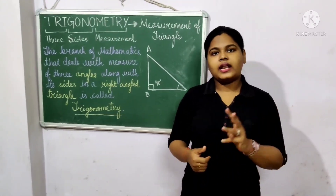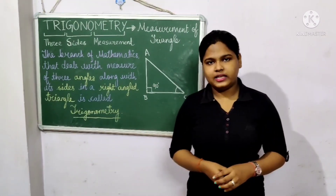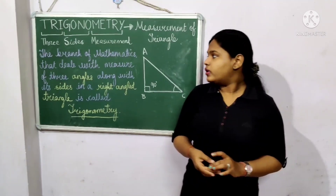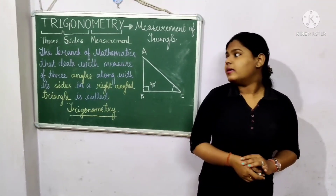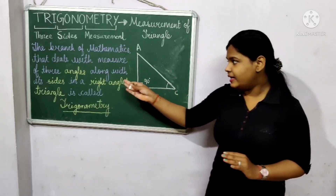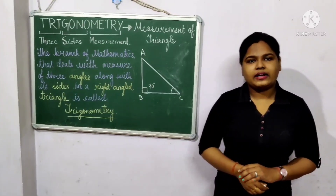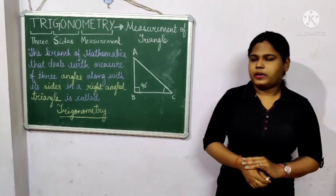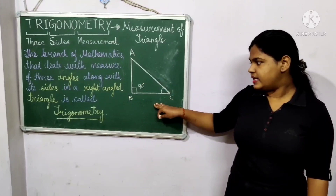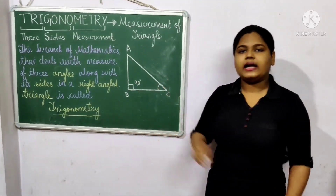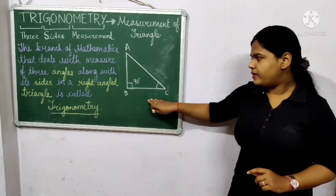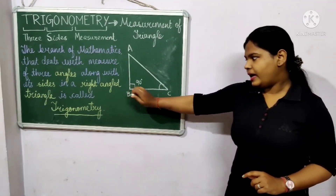We know that three line segments when bounded with each other they are called a triangle. So basically trigonometry is defined as the branch of mathematics that deals with the measurement of three angles along with the sides in a right angle triangle. You can see here it is a right angle triangle ABC, where the B angle is 90 degrees.